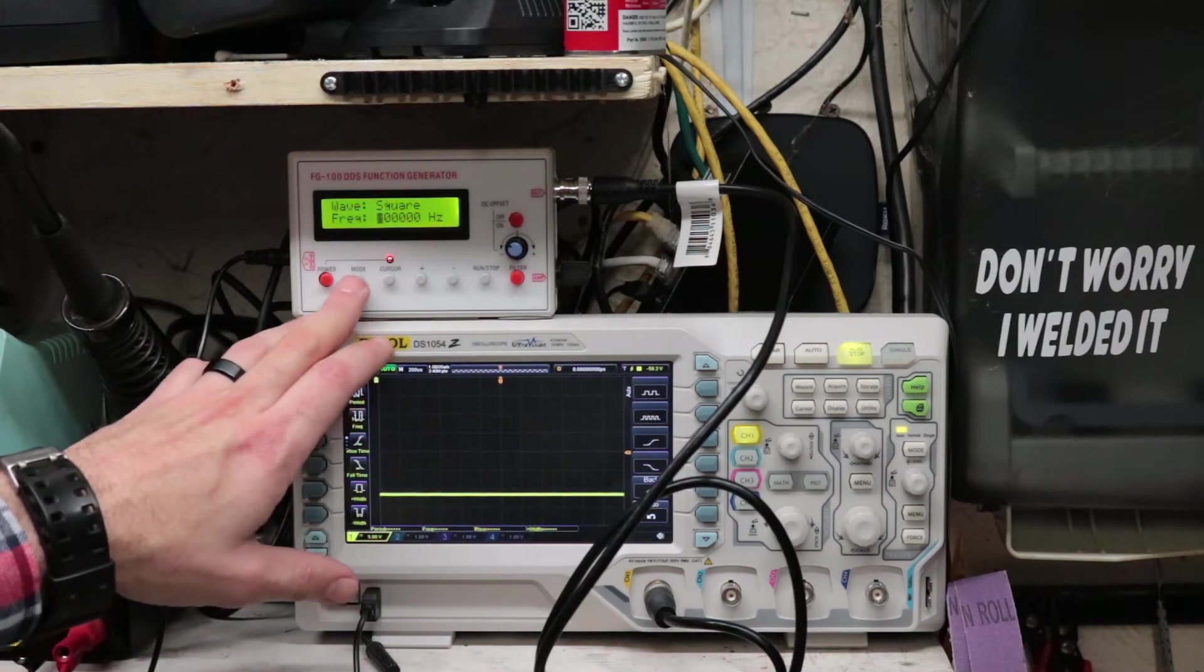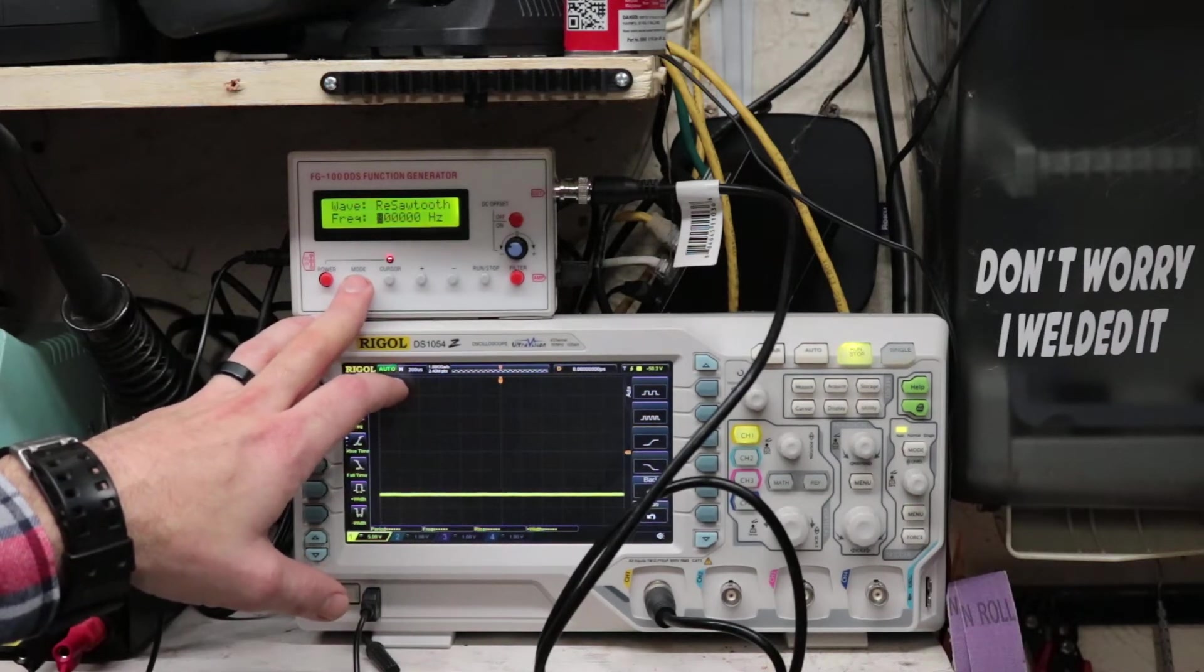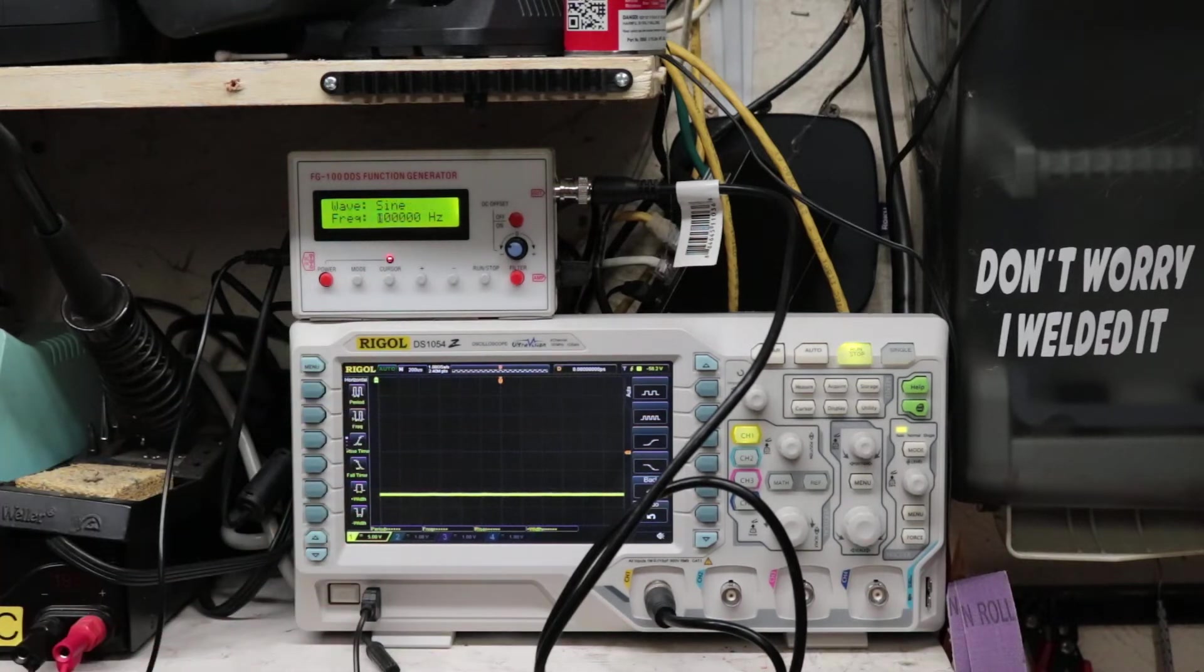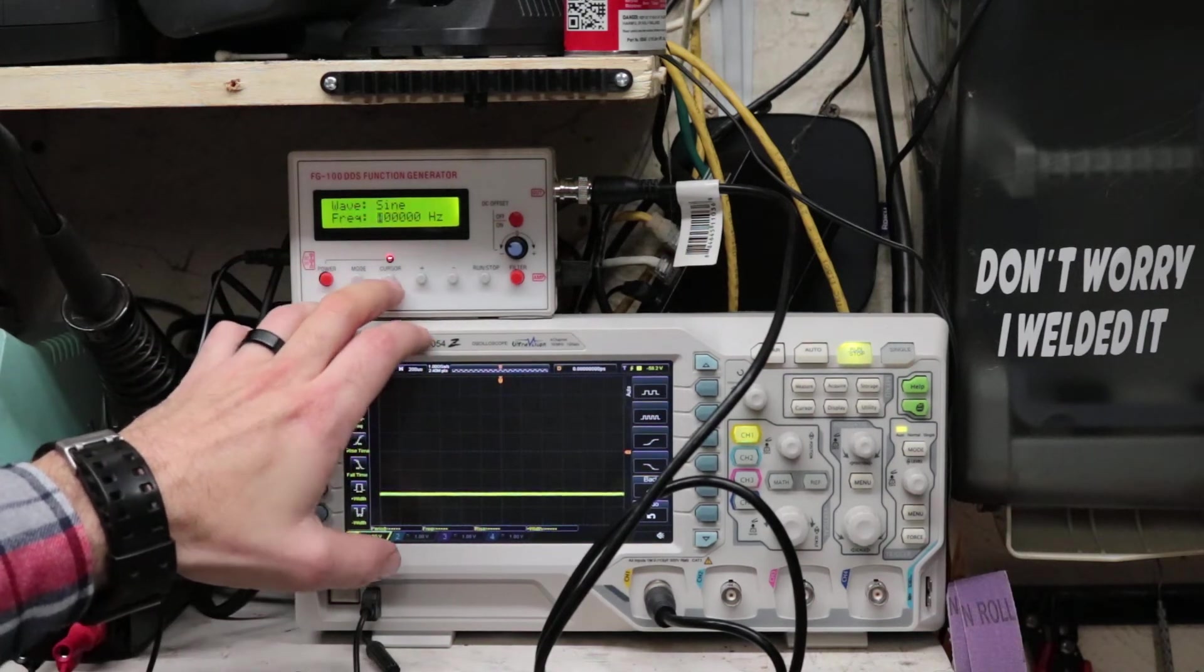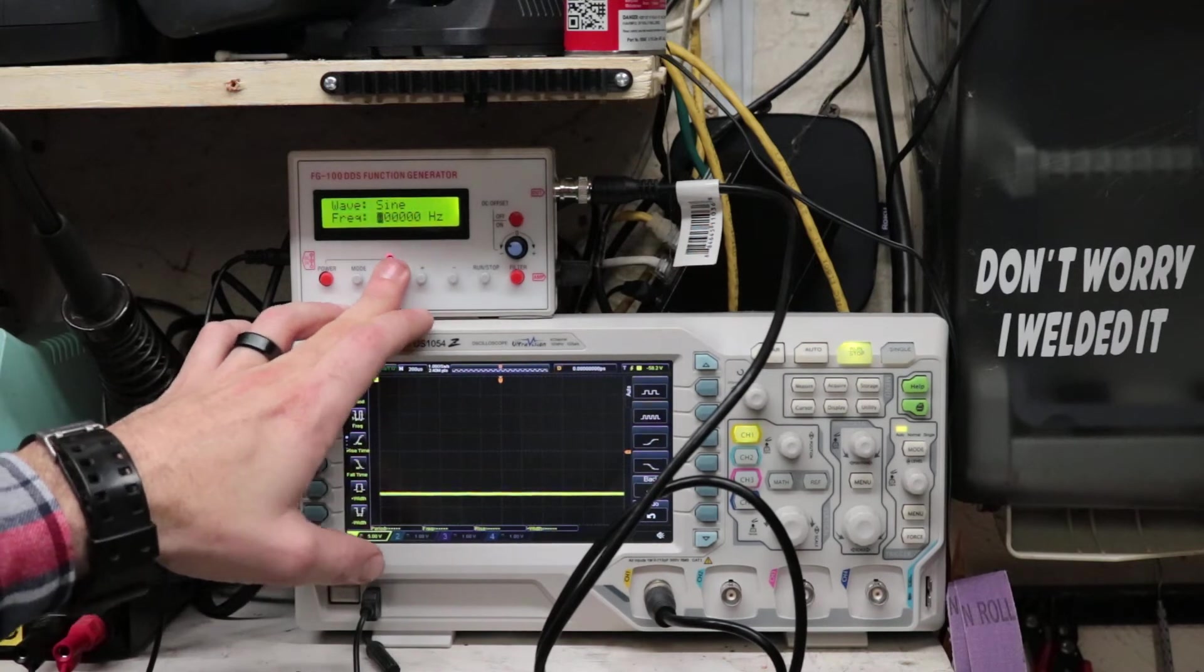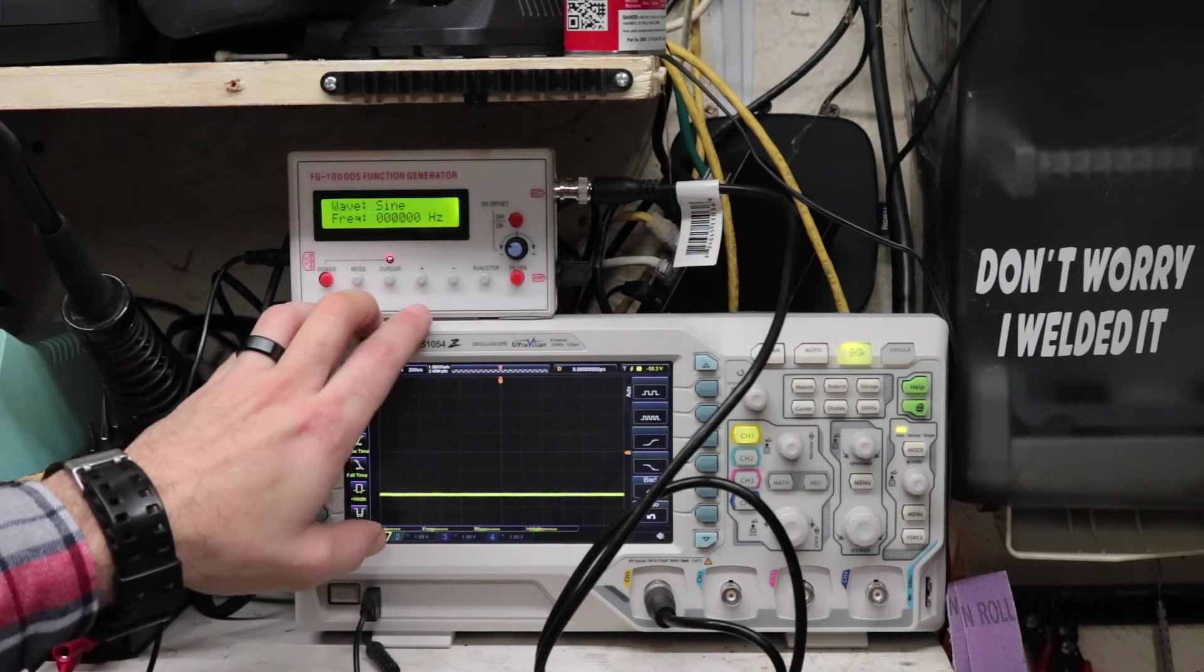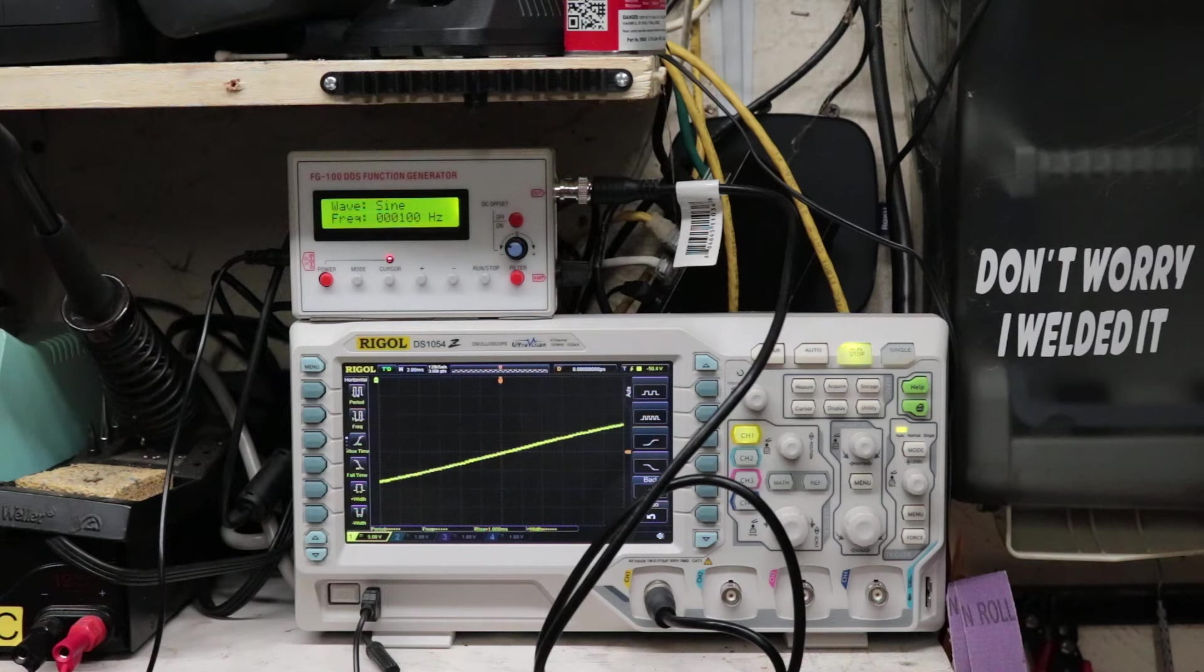We'll get it set up here in just a second and check its accuracy. It does sine wave, square wave, triangle wave, sawtooth and reverse sawtooth, and it's supposed to be up to 100 kilohertz. We'll check about as high as the scope will go. We'll get started here, set it on sine wave, move our cursor over and start at 100 Hertz.